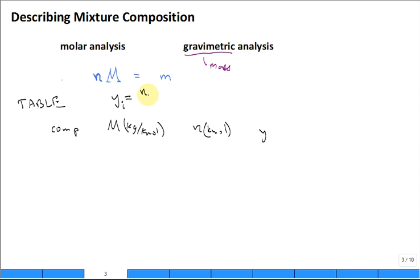Y is a mole fraction, so Y_i is the number of moles of the species or component i divided by the total number of moles. Sometimes I'll put TOT for total, sometimes just leave it off. Without a subscript, n would be the total number of moles in that gas mixture.